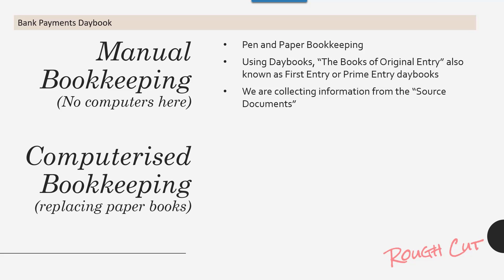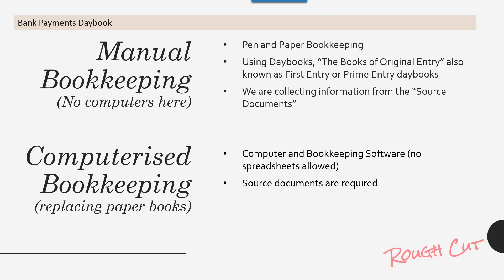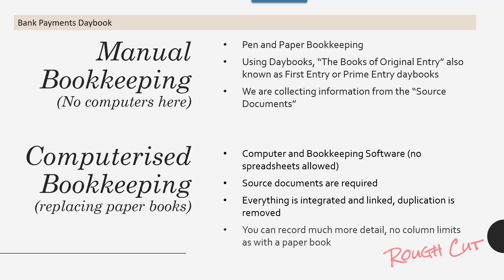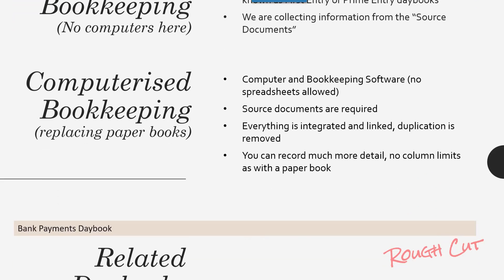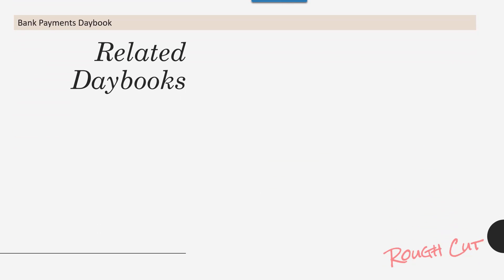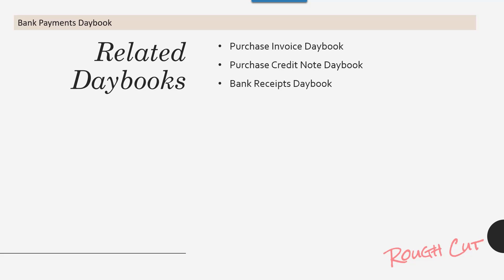In computerized bookkeeping, we're replacing paper books with a computer and bookkeeping software — no spreadsheets allowed. Source documents are still required. Everything is integrated and linked, duplication is removed, and you will record much more detail with no column limits as with a paper book. Related day books include the purchase invoice day book, purchase credit note day book, and bank receipts day book.